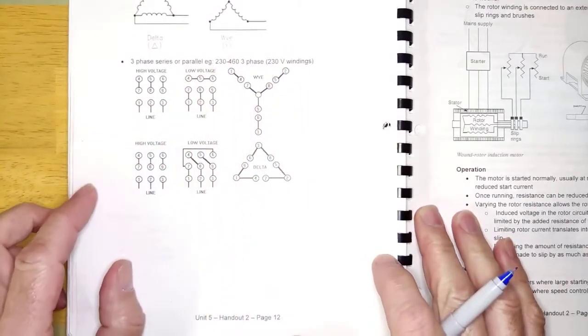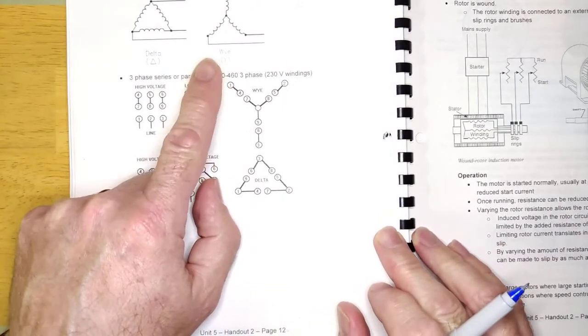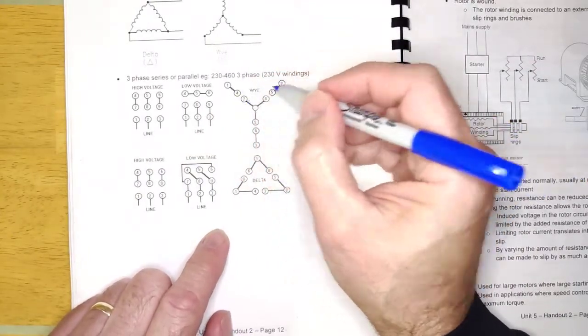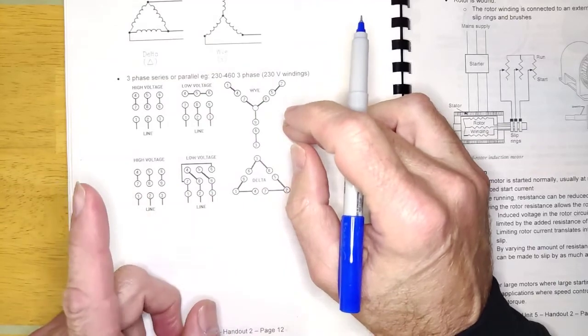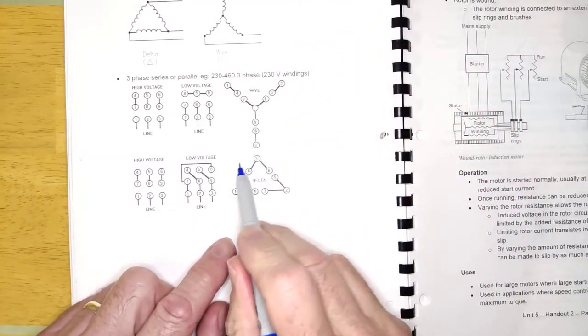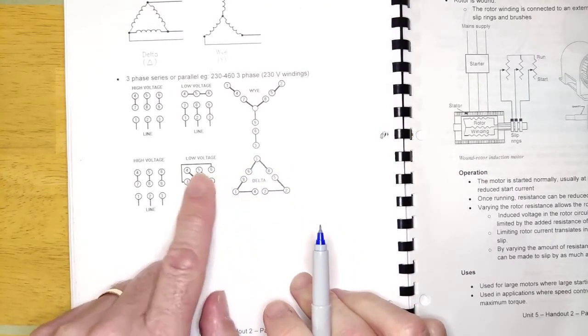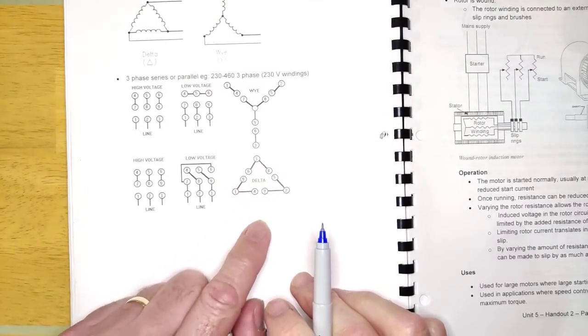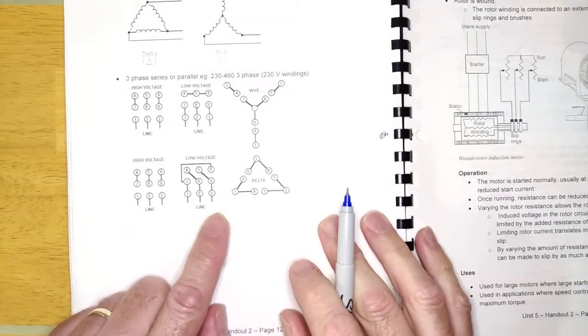So a lot of motors, this is single phase, but three phase does it the same way. A lot of motors, when they are rated for dual voltage, meaning that you can connect them to two different voltages, it will basically be wiring the thing up in series or parallel, depending on whether you're connecting at high voltage or low.